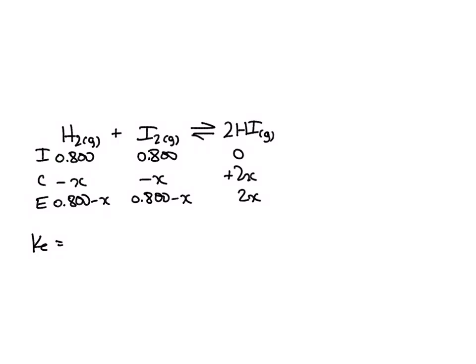Kc here is equal to products over reactants. So this would give us HI squared over H2 times I2. Kc in the question is 53.3.